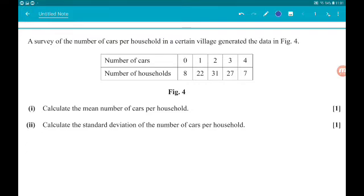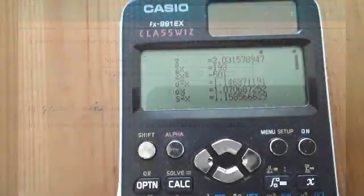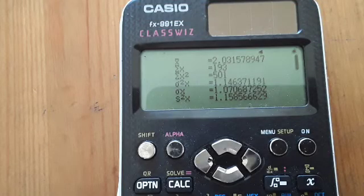So you should have a column for X on the left and frequency on the right. Put in all the data and then press AC to get back to the main screen. Then press option and then number 2 for variable calculations and you will get this screen. Now, our mean is X bar.